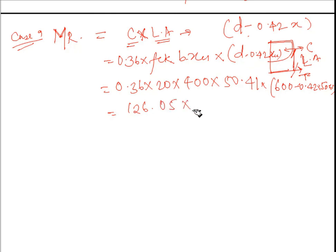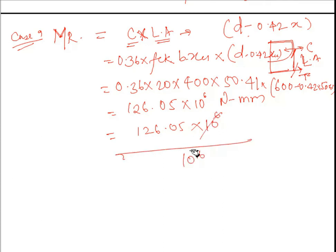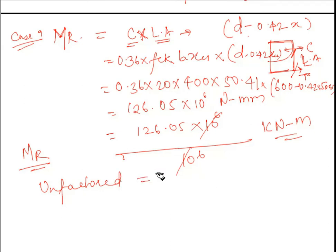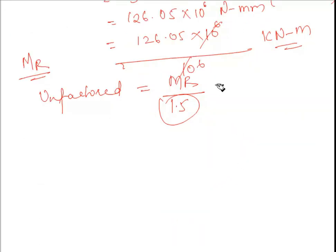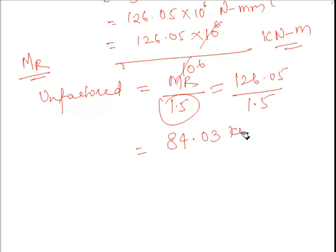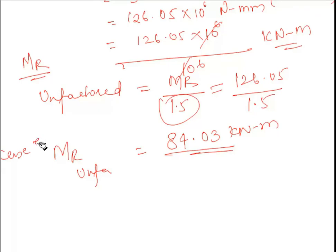This gives MR = 126.05 × 10⁶ N·mm = 126.05 kN·m, which is the factored moment of resistance. To get the unfactored moment of resistance, we divide by the factor of safety 1.5, so MR unfactored = 126.05 / 1.5 = 84.03 kN·m. This is MR unfactored for Case A.